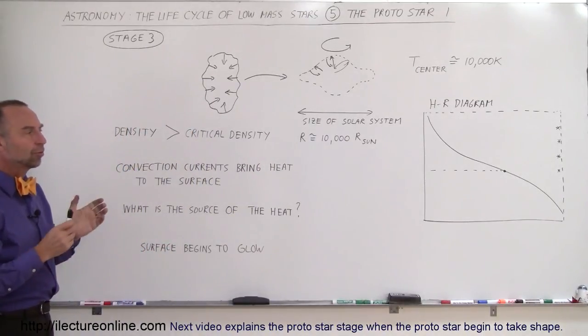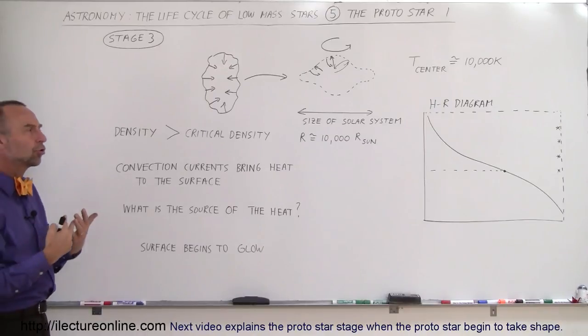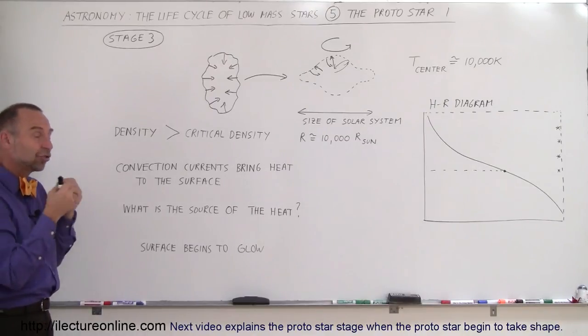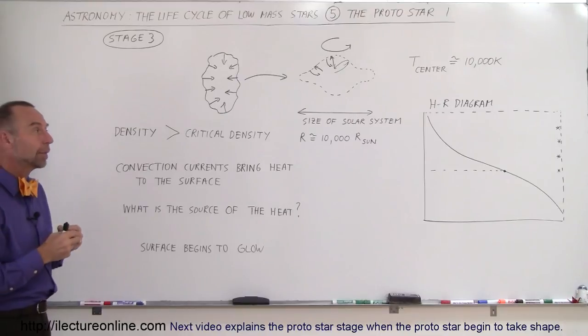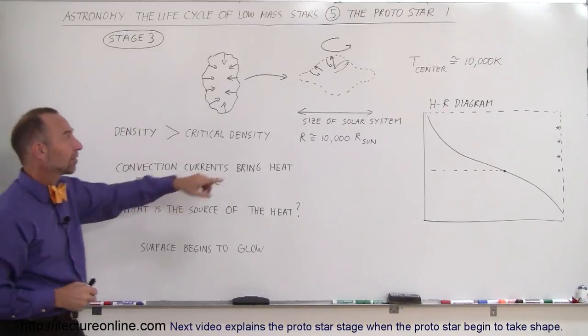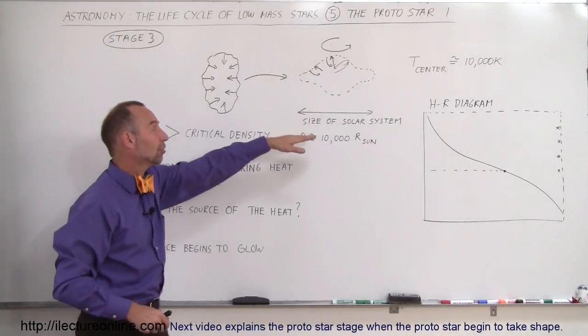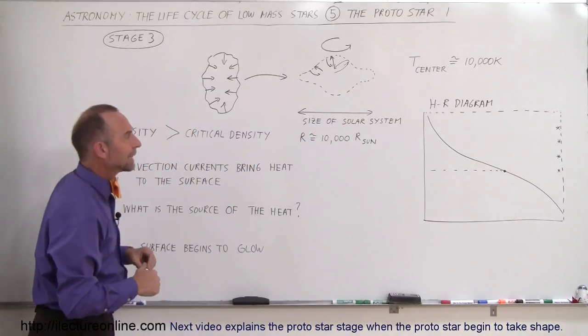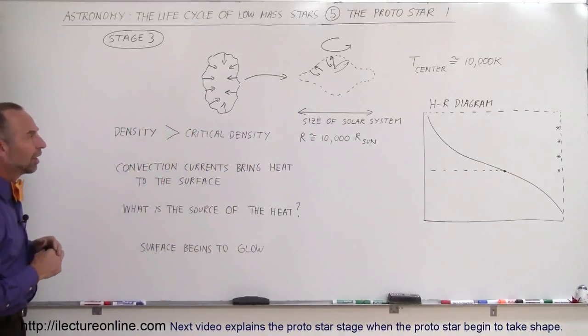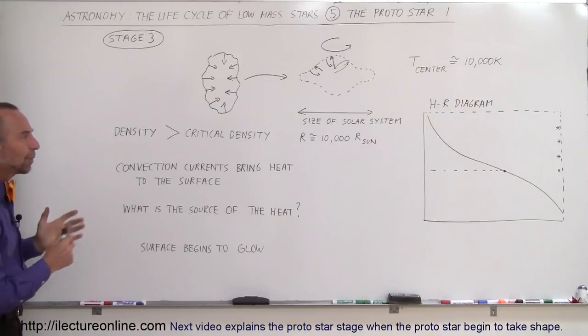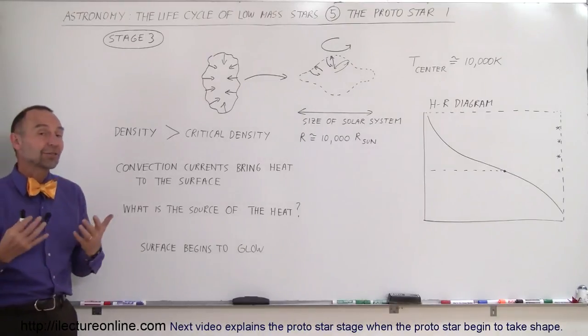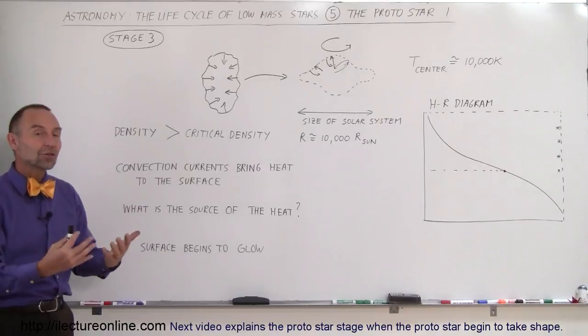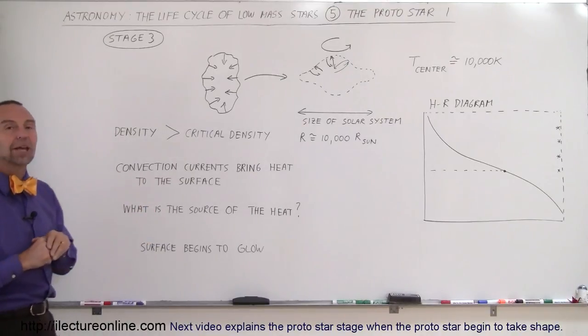At this point we have what we call a protostar, which is separated from a real star in that there's not yet any nuclear fusion taking place. The temperature required at the center for nuclear fusion is much greater than 10,000 degrees, so nuclear fusion is not yet part of this star's life. As you see in the next video, the evolution continues and marches towards what our star looks like today.